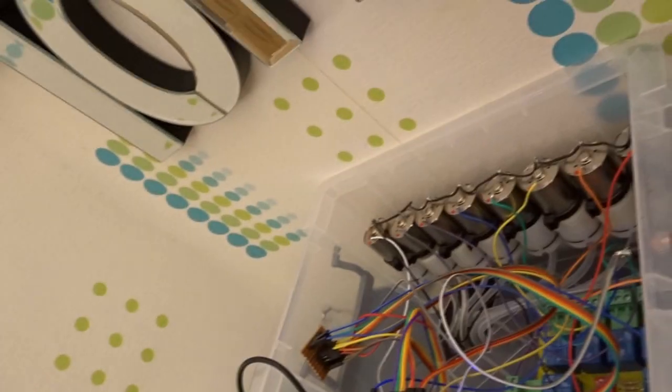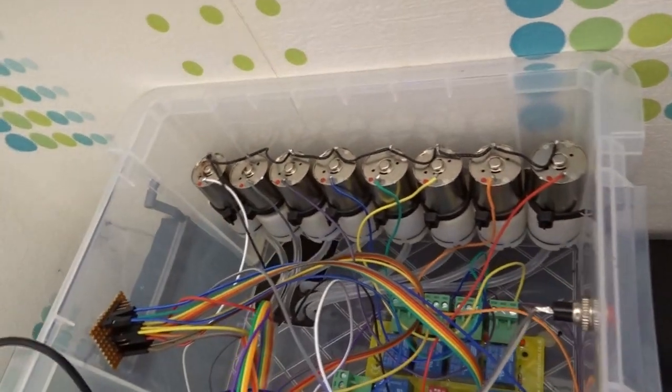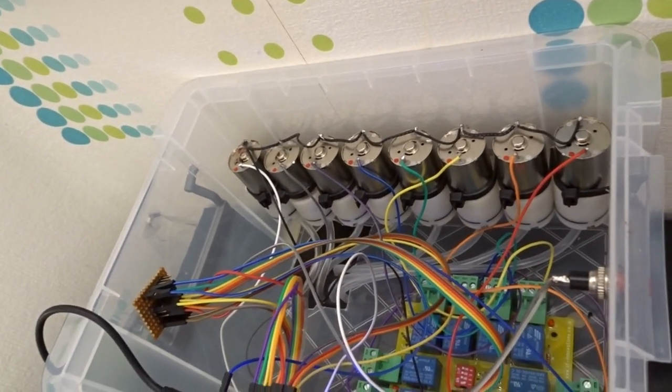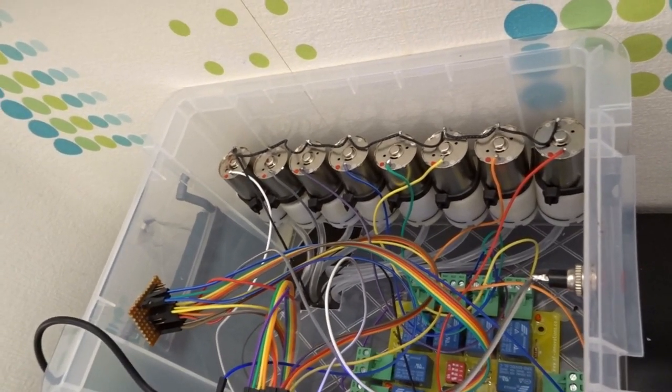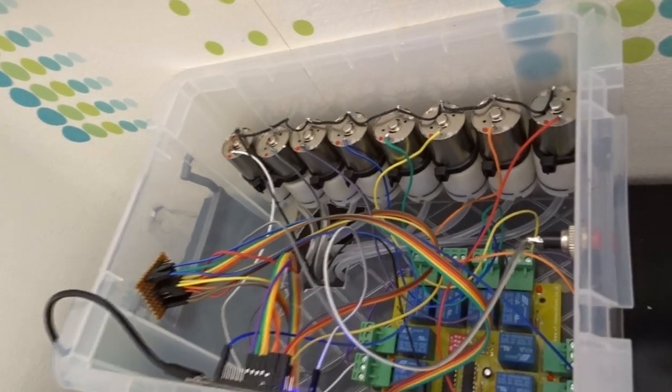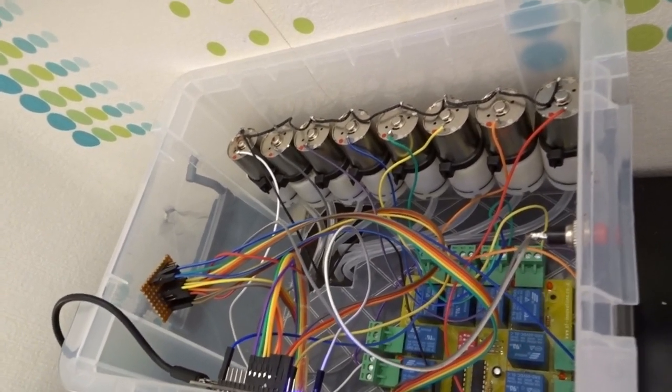So, behind here you can see the brains of the operation. What we have there is eight compressor motors. Now these are pretty much commodity items, they're from blood pressure monitors, so you can pick them up for about a pound each at the moment, which is quite impressive. So those push the air into the bottles.